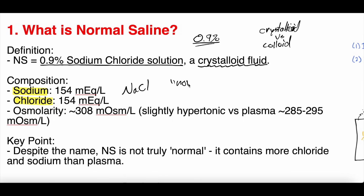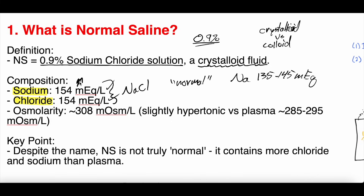In the blood, sodium of 135 to 145 milliequivalents is normal. So normal saline has more sodium and more chloride than is physiologic. It is not necessarily 'normal' as compared to the serum — it has higher concentrations of sodium and chloride than the blood does.